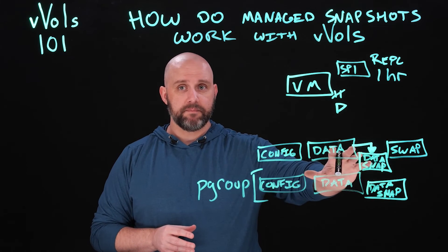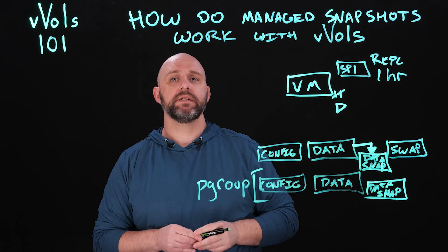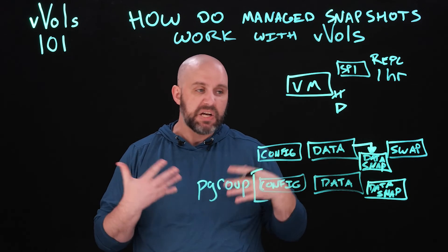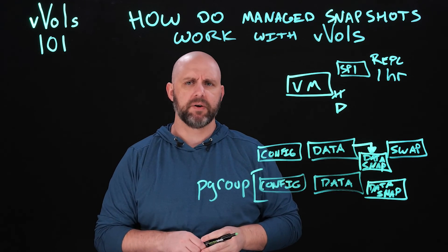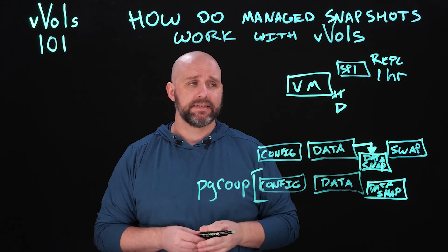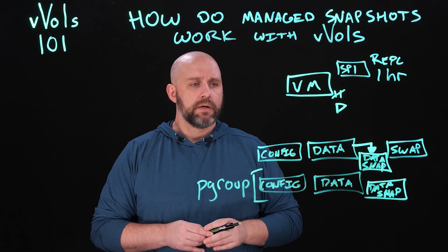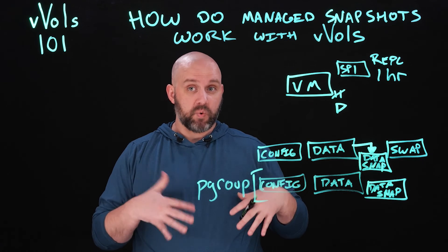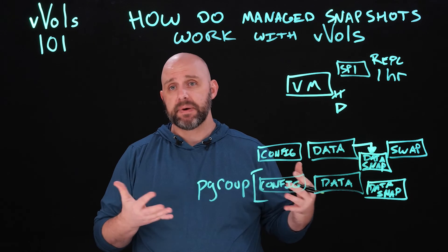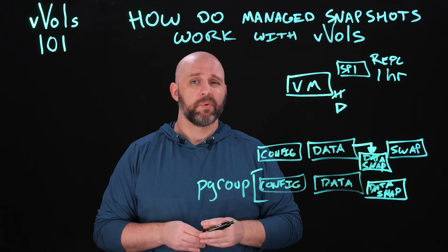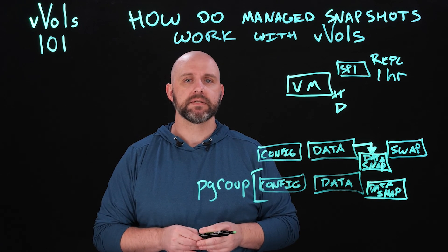The more of these managed snapshots you're taking, you don't have to worry about whether it's been there for 10, 20, or 30 days. You're still going to get the same performance since there's no redirection of IO, no worries about delta file bloat, and no concern about how long it takes to consolidate. You're still going to get the correct performance that you need. vVols and managed snapshots work really well together, letting you leverage those features and workflows without worrying about potential impact to performance or ability to use the VM itself.